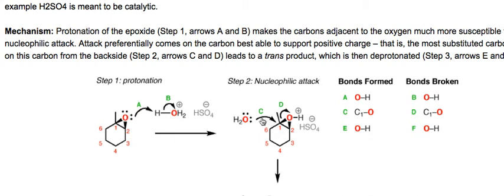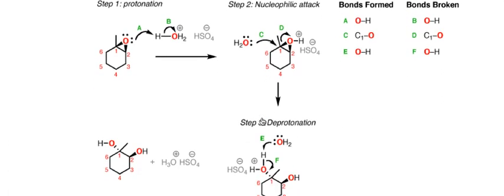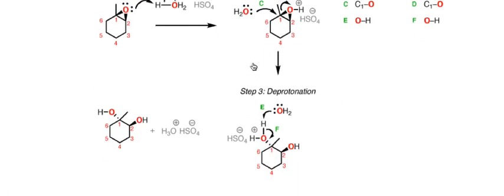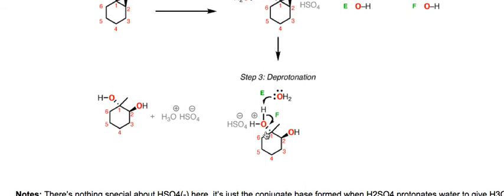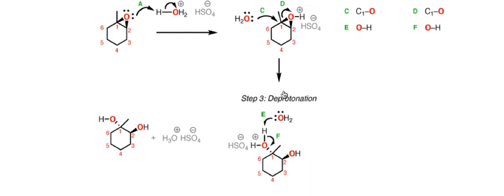Now this has to occur with inversion of stereochemistry. When we go further down, we see that we're forming a carbon-oxygen bond with now the stereochemistry gone from being a wedge to now it's a dash. So we've done an inversion of stereochemistry.